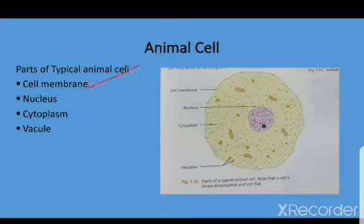The first part of the animal cell is the cell membrane. Cell membrane is the outermost layer that is very thin and controls the movement of material into and out of the cell. That's why it is also called partially permeable.